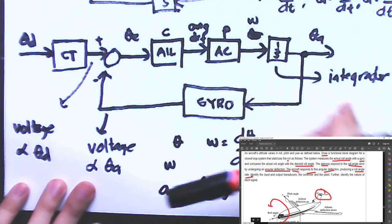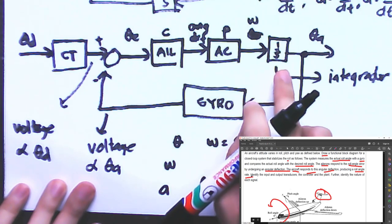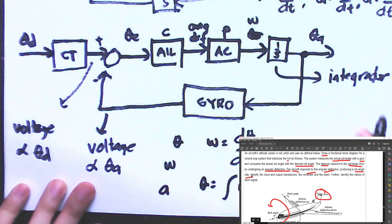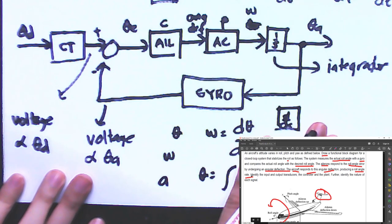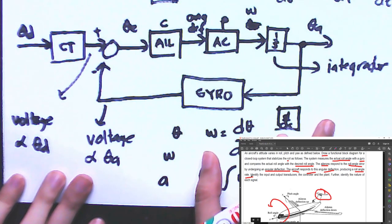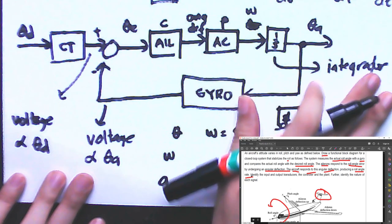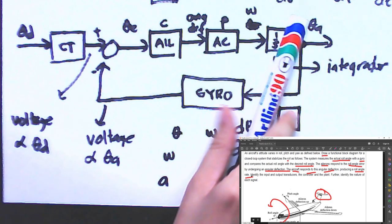You might have also noticed that the symbol for the differentiator is d/dx, while the integrator is 1/s. This completes our three examples for this discussion.